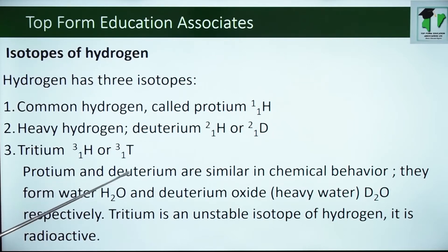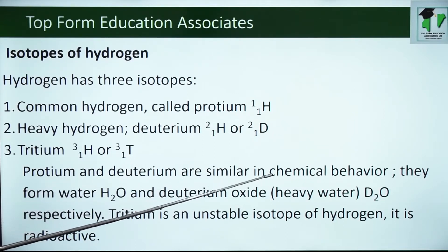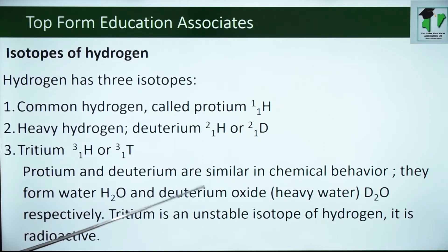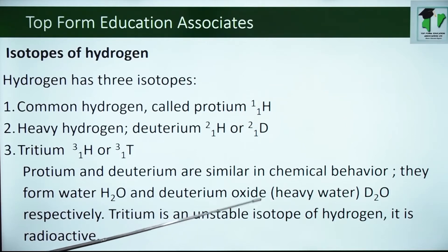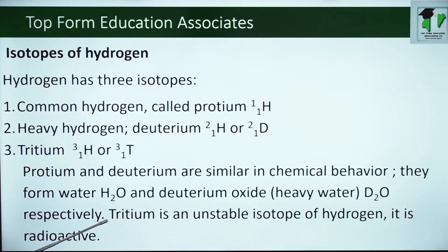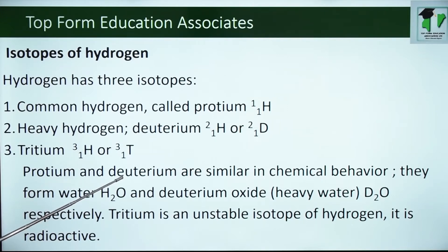Protium and deuterium are similar in chemical behaviour. They form water and deuterium oxide or heavy water respectively. Tritium is an unstable isotope of hydrogen. It is radioactive, meaning that it can undergo radioactivity.